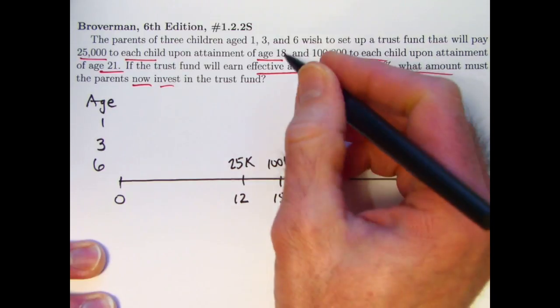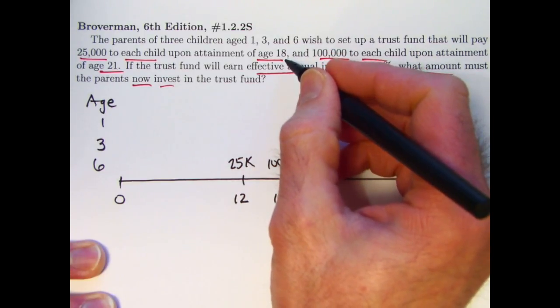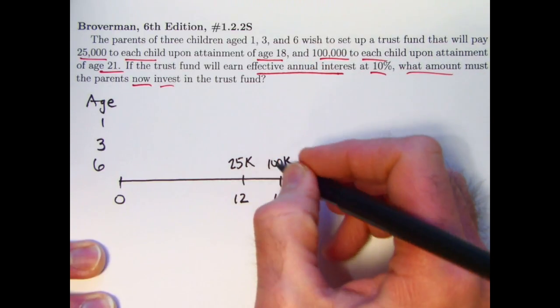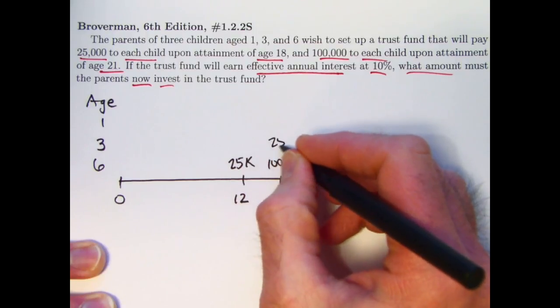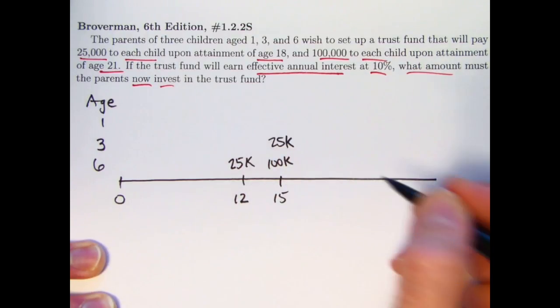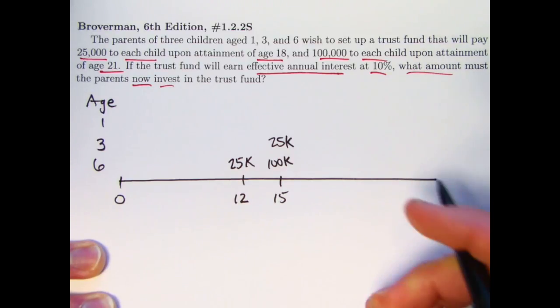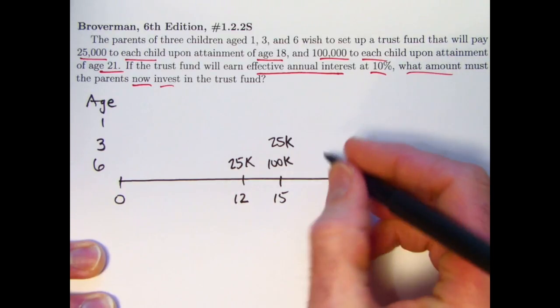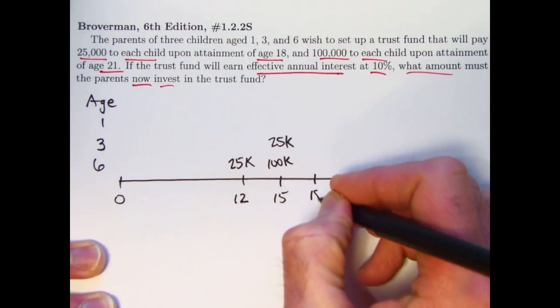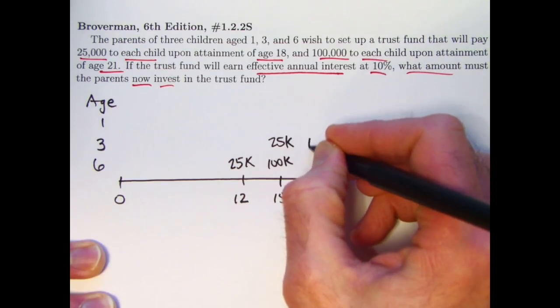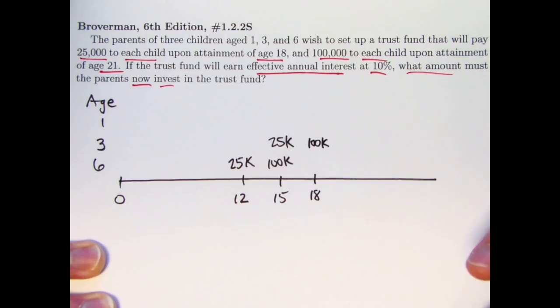What about the three-year-old? The three-year-old will reach age 18 in 15 years. So at 15 years, we're going to make a $25,000 payment to them. Then three years later, when they reach the age of 18, to this current three-year-old, we will make a $100,000 payment.